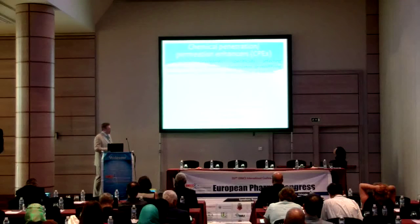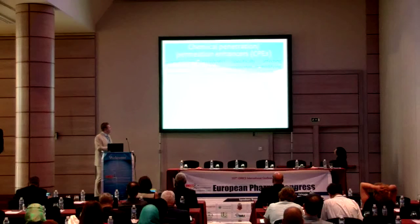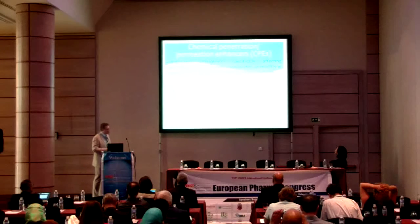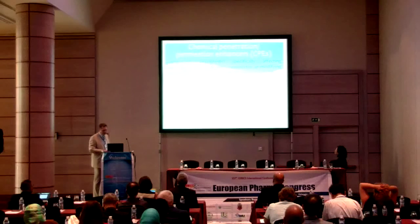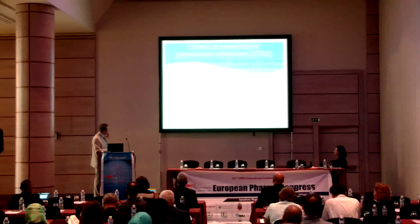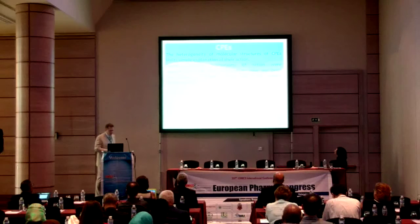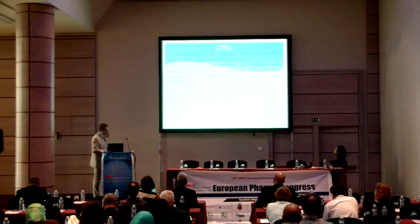I will talk about chemical permeation enhancers. These are compounds that specifically affect the intracellular space between corneocytes or modify corneocytes by hydration or denaturation. There are 10 different classes of chemical enhancers, which form a relatively heterogeneous family. The exact mechanism has not been fully elucidated, but enhancers exhibit multiple effects — they can interact with the matrix, interact with proteins, and promote partitioning of drugs.